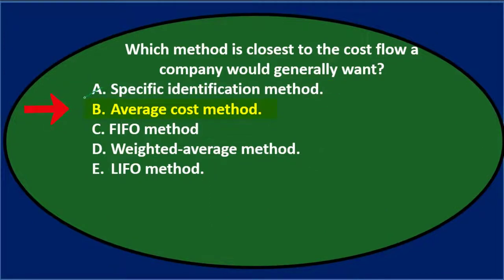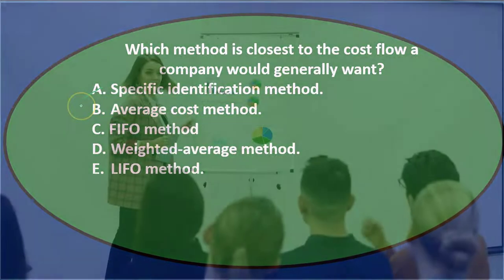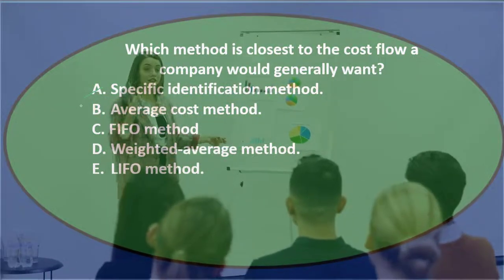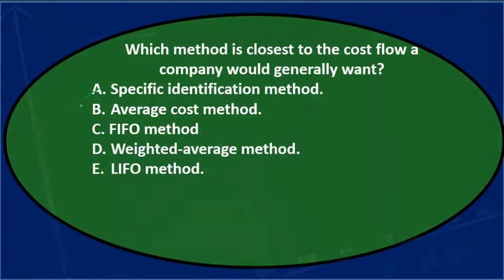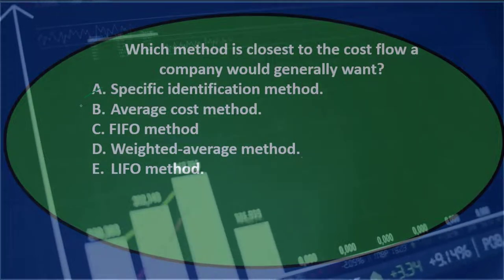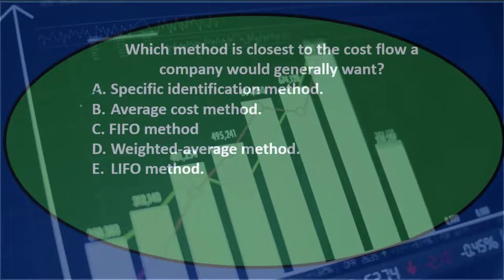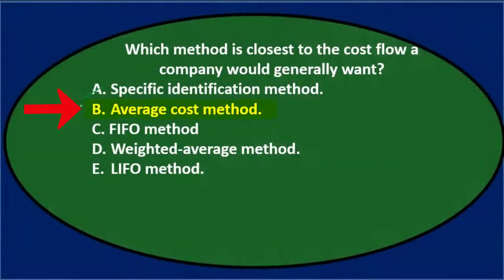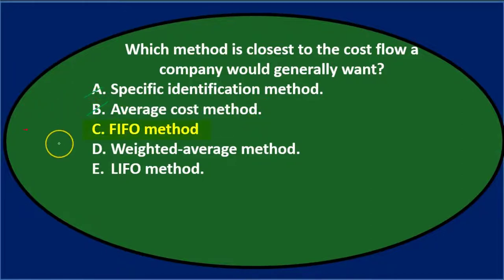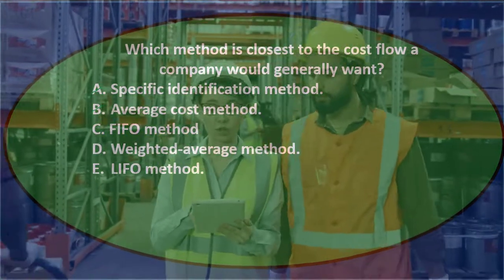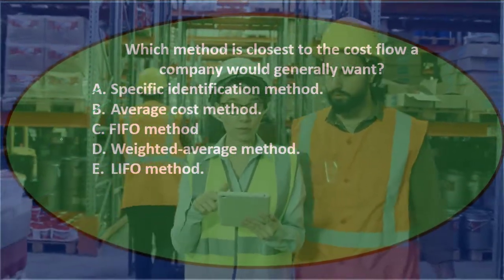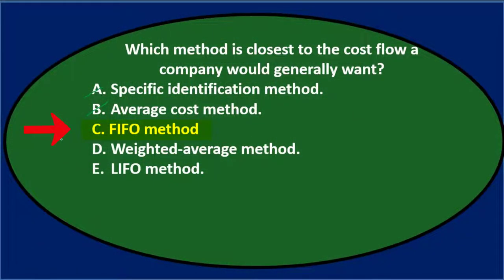B says average cost method. An average is a cost flow assumption where we just take the average between the high and low costs. If prices are rising, older inventory would be cheaper and newer inventory more expensive, and we'd just say it's about the average. That's not really a flow assumption — it's taking the middle ground of the high and low costs. So I don't think that's going to be it. First in, first out would mean the inventory first going into the company is assumed to be the first leaving in terms of sales. I'll keep that one for now.